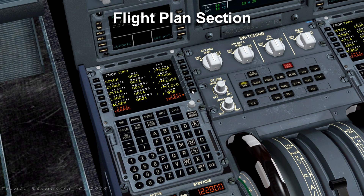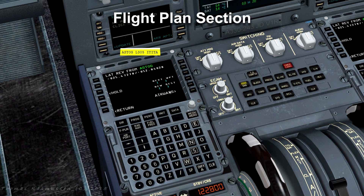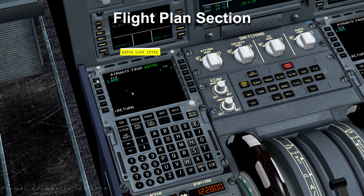Continuing to add more waypoints to our flight plan by pressing the insert button and then the button next to the last new waypoint in the flight plan. Click Airways, write L305, press VIA, then ITITA, and press the button to confirm. Again we click this button to add things to our previous flight plan.